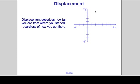We have a frame of reference that we use to keep track of our location in space. This is the X axis. This is the origin — 0 — and these are the Y axis.